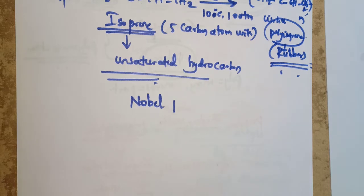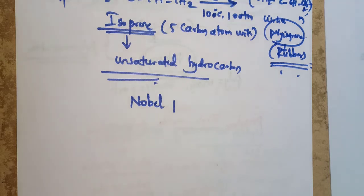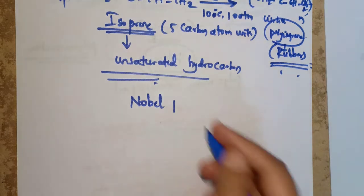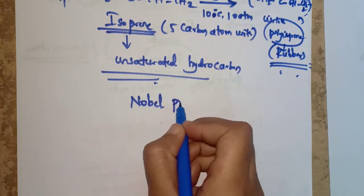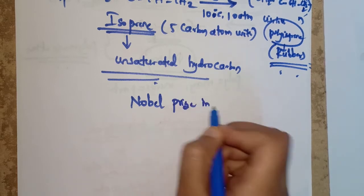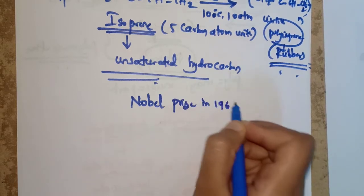The impact of Ziegler-Natta catalyst on polymer chemistry has been so enormous that Ziegler and Natta were jointly awarded the Nobel Prize in 1963.